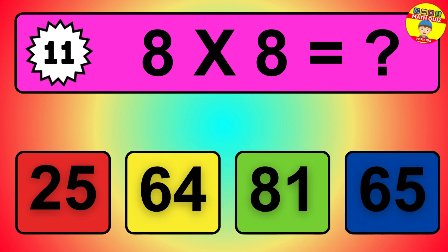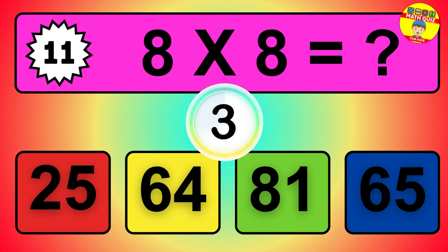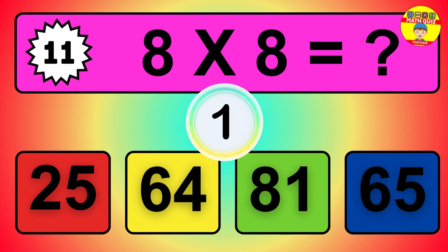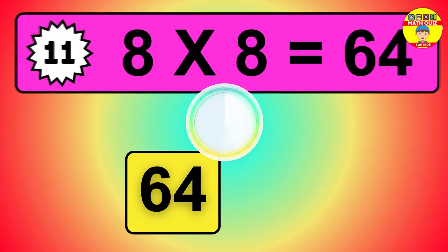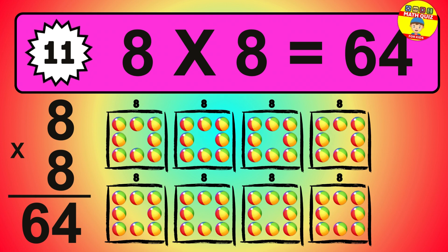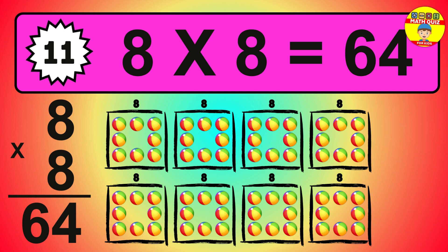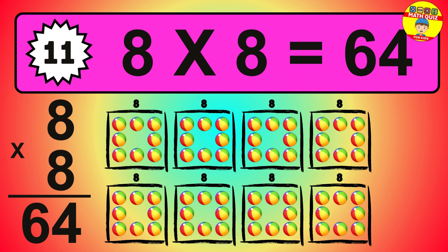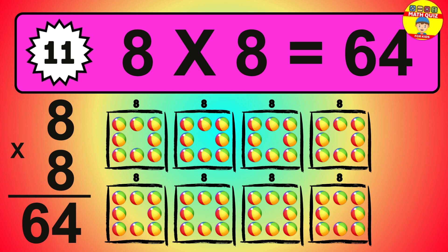Question 11. 8 times 8 equals what? The answer is 8 times 8 is 64. To calculate, we have 8 groups with 8 balls each one. So how many balls do we have? 64 balls.